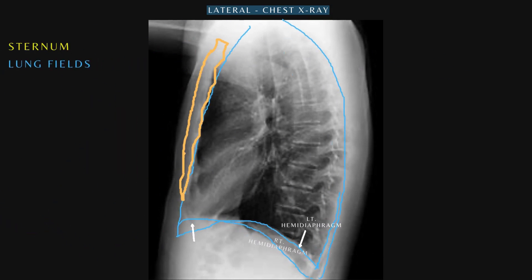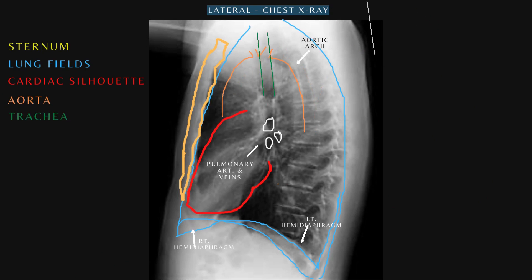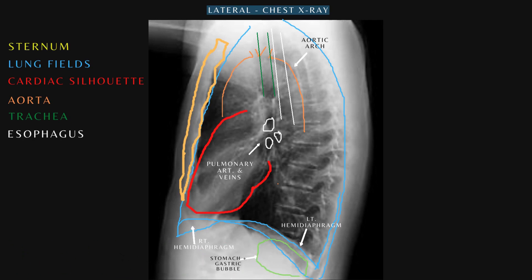The lung fields with the left and right hemidiaphragm. The cardiac silhouette, pulmonary artery and veins. The aorta and the aortic arch. The trachea. Posteriorly we can see the esophagus, and inferiorly the gastric bubble. We can also outline the spinal column.